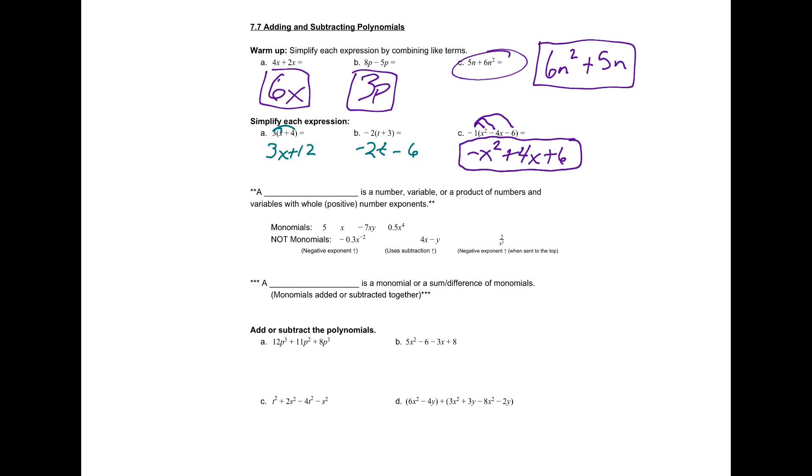A blank is a number variable and a product of numbers and variables with whole positive number exponents. A monomial. So some examples of monomials: just 5 by itself, the letter x, negative 7xy—notice that's all stuff that's being multiplied in that—and then 0.5x to the fourth. Decimals are fine, positive exponents are fine.